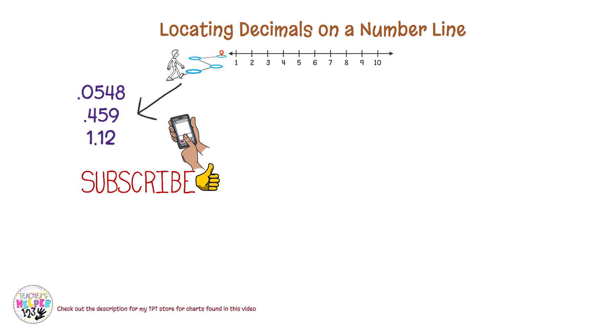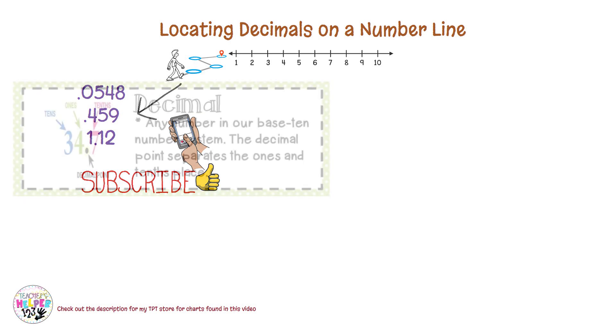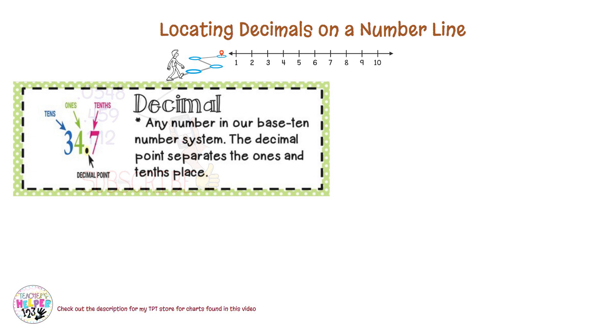Before we get started, let's look at a few vocabulary words that are very important for this lesson. Decimals are numbers that are in between a whole number such as this number here, 34.7.